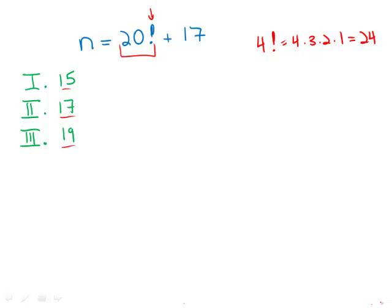Because if we take a number divisible by 15 and add 17, 15 goes into this, but 15 does not go into that. And therefore 15 would not divide evenly into n.